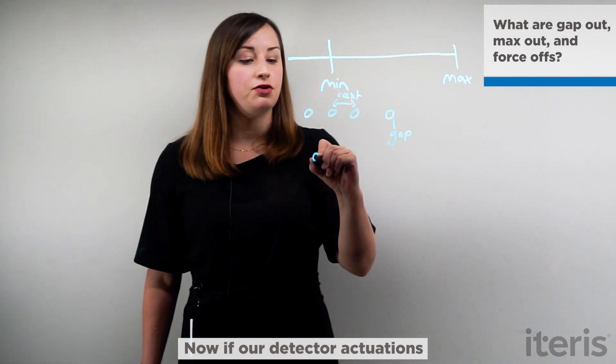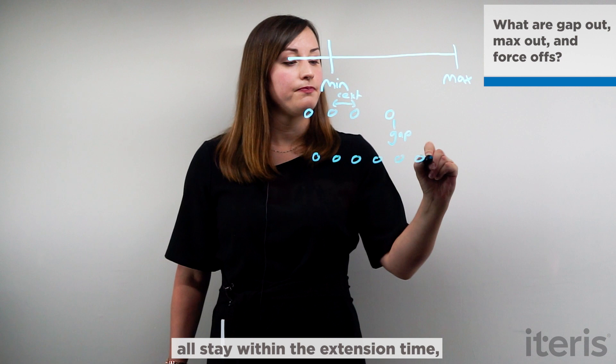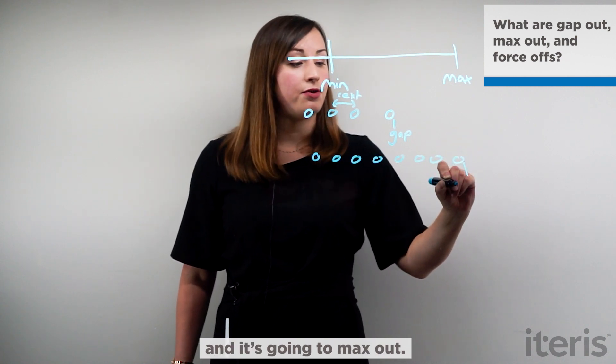Now if our detector actuations all stay within the extension time, the phase is going to hit the max green and it's going to max out.